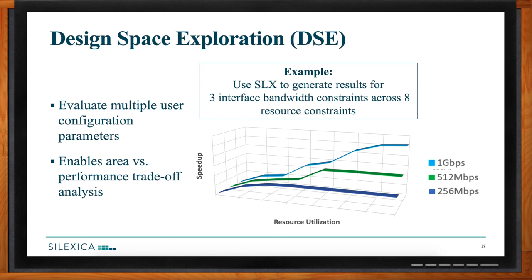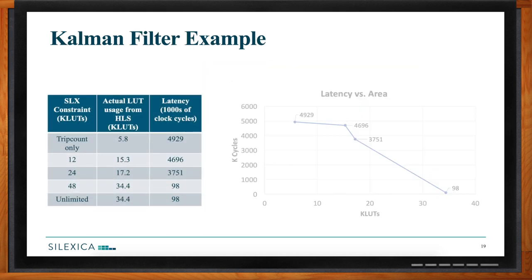You can also make latency and area tradeoffs. In a Kalman filter example, different resource constraints — 12,000, 24,000, or 48,000 lookup tables — had a big impact on latency: from over 4,000 clock cycles down to under 100. By quickly running design space exploration on your design or a part of it, you can identify the best performance-per-area tradeoff you're willing to make.